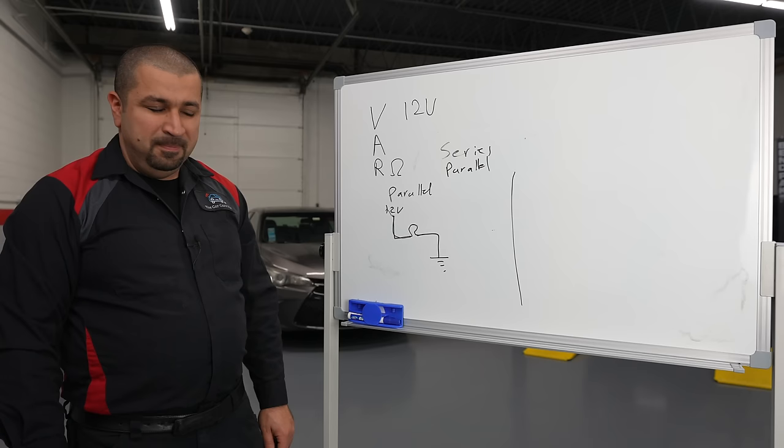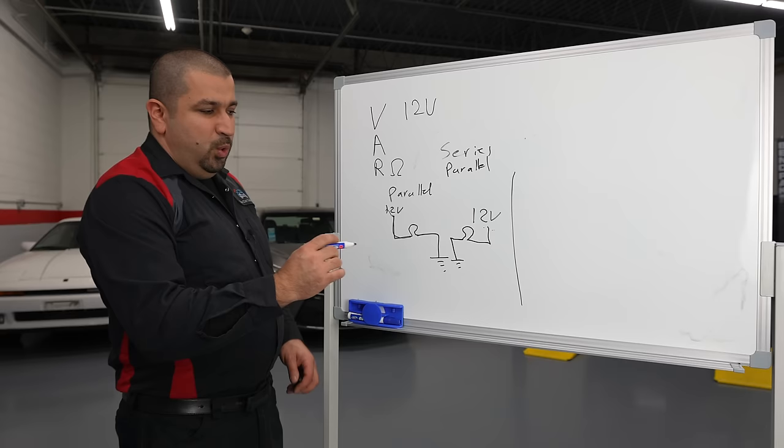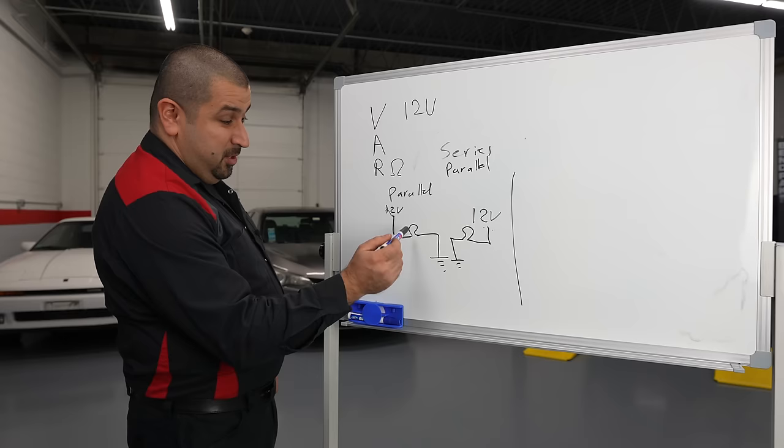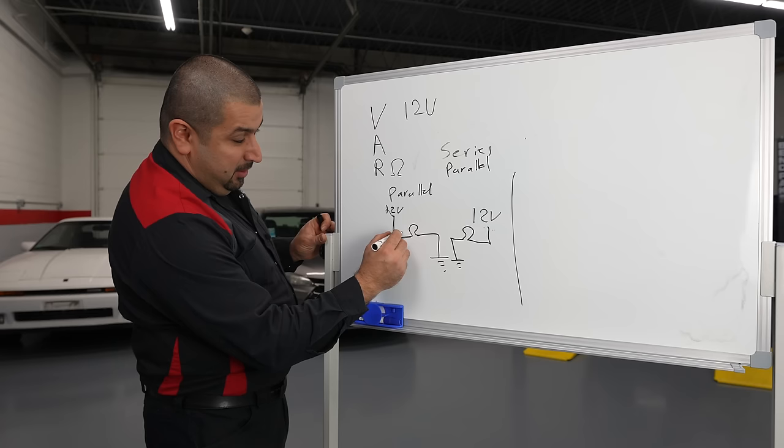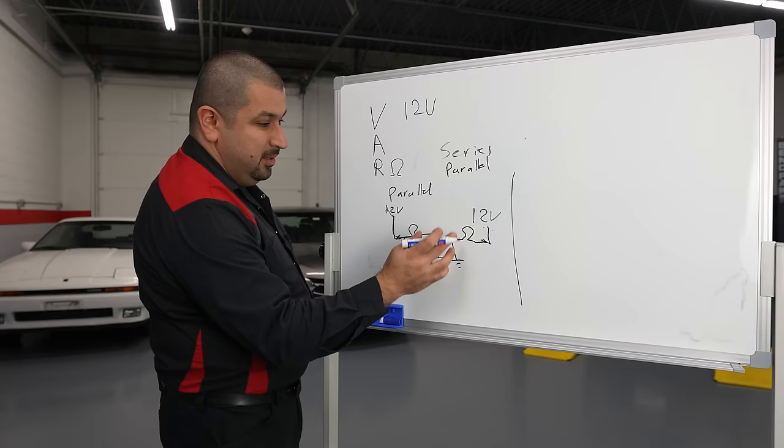Now if I draw another 12 volts, very nice drawn bulb, and I do this. We have just drawn the circuit of the headlights. This is one headlight, this is the other. You got 12 volts and let's say you have a little switch here and a little switch here. When you turn on your headlights, these switches can connect and now your headlights come on. Very simple.